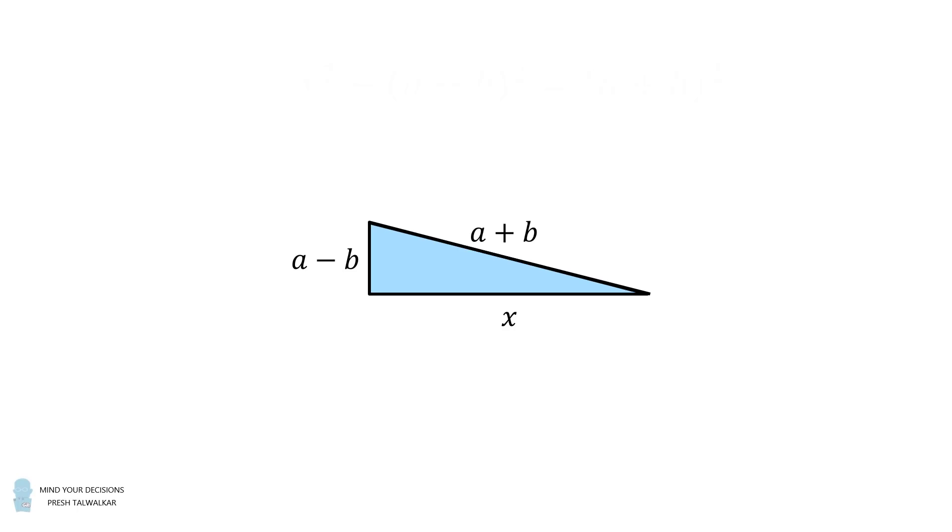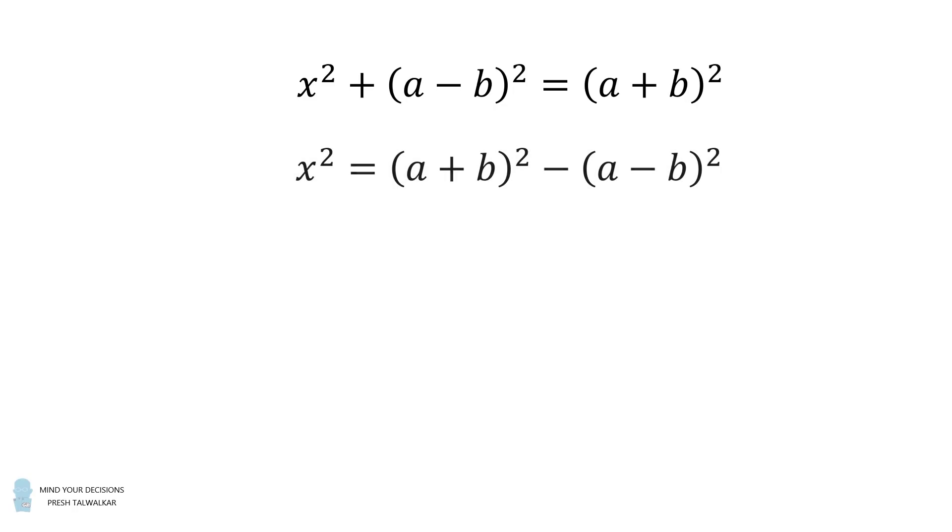Because we have a right triangle, we have x squared plus the quantity a minus b squared is equal to the quantity a plus b squared. From here, we just solve for x. We'll subtract the quantity a minus b squared from both sides. Then we'll expand each binomial.